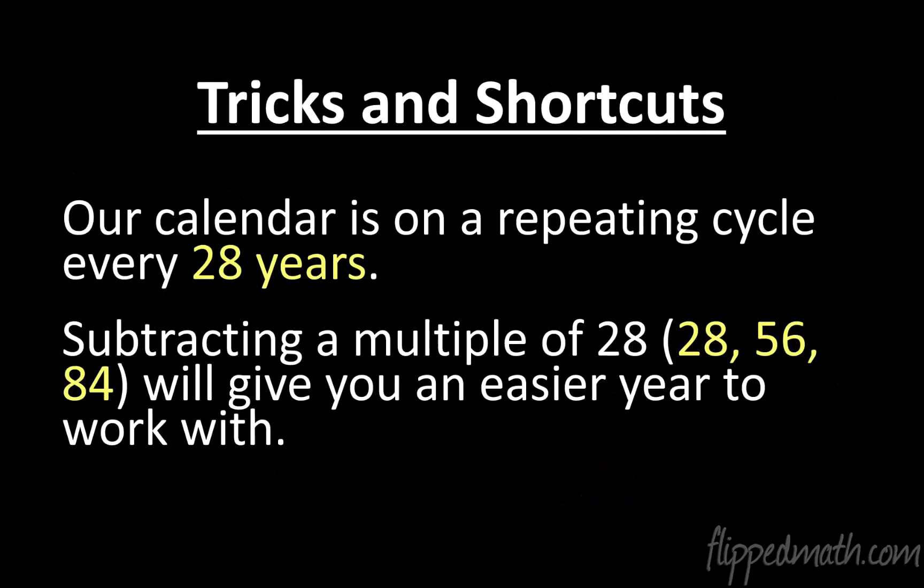So here's some tricks and shortcuts to help us out. This is kind of interesting. Our calendar is on a repeating cycle of every 28 years. Or in other words, 28 years ago, the calendar looks exactly the same. Now, it actually goes in this interesting five, six, 11, five type of a pattern where it rotates every five years, six years. But you don't know where in that pattern you are, like right at any given moment. Like, is it going to repeat five years from now, six years from now, 11 years from now? It's going to be one of those three. But the cycle for sure repeats every 28 years. And so that's why we say 28.